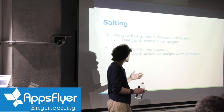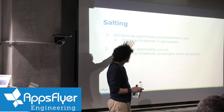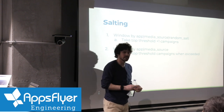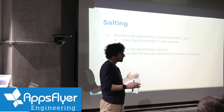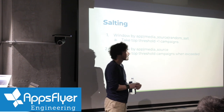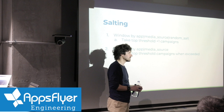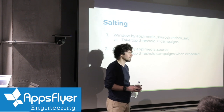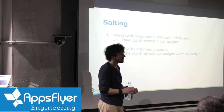Luckily, Spark for reasonable-sized data like this can do the shuffles pretty quickly, and that's one of its major selling points — it's pretty optimized for doing the shuffles.